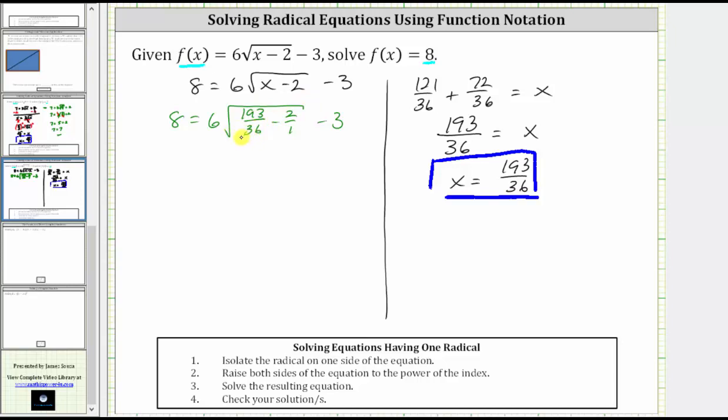Let's determine this difference here. Remember the common denominator is going to be 36. We multiply the top and bottom of 2/1 by 36 to obtain the common denominator. This gives us 8 = 6√(193 - 72) = 6√(121/36) - 3.